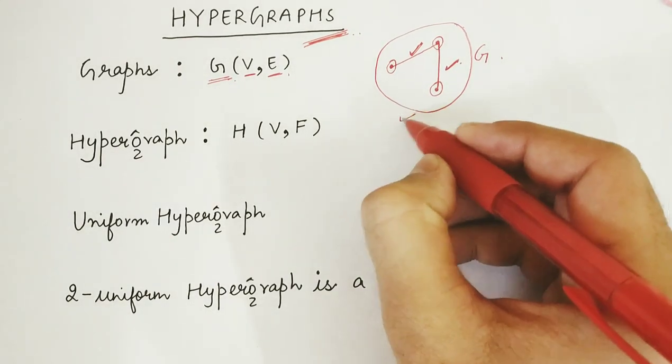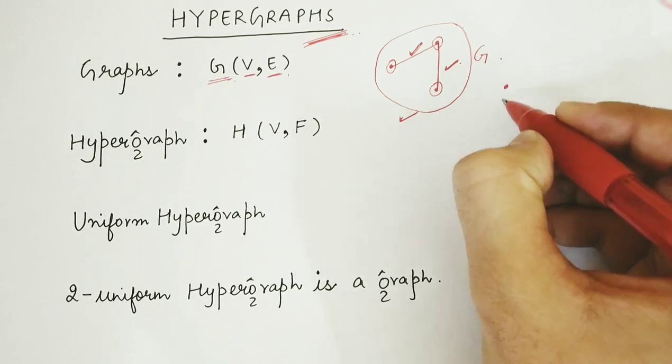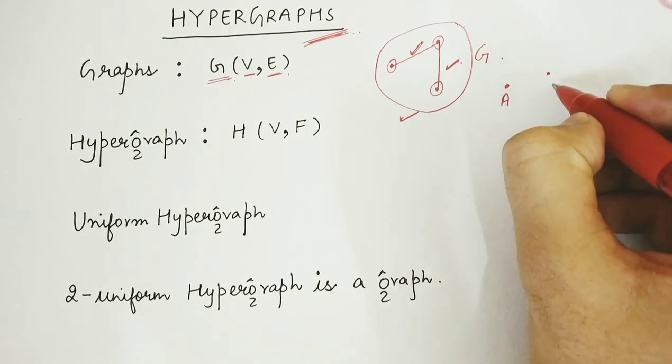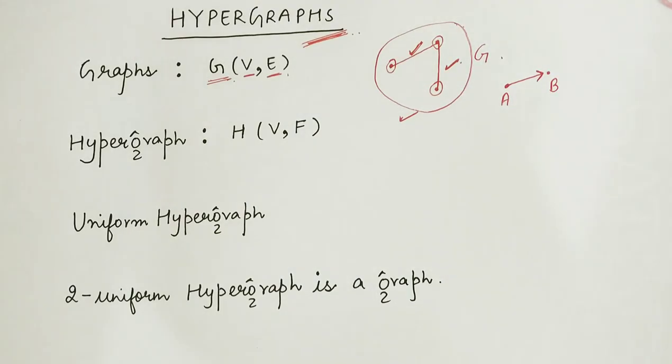In this example, we have seen an undirected edge. If this would have been from vertex A to vertex B with an arrow, we would have said that it is a directed edge.